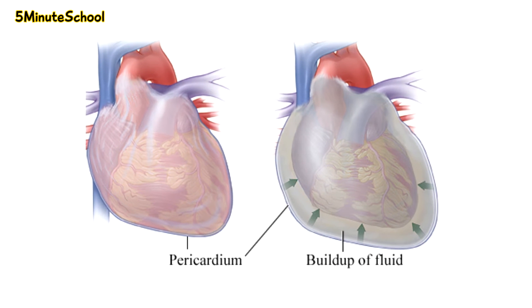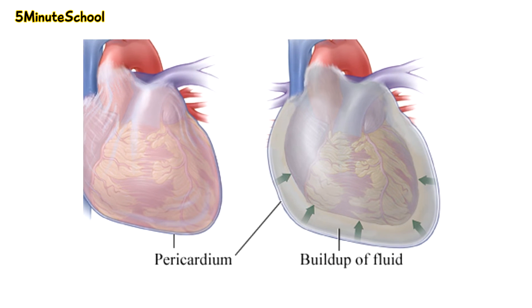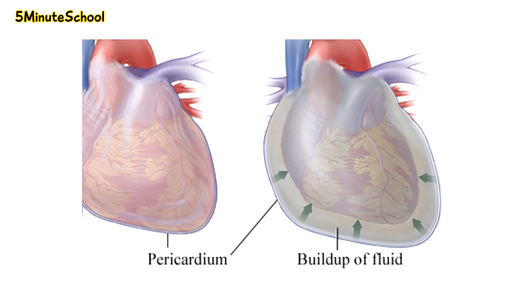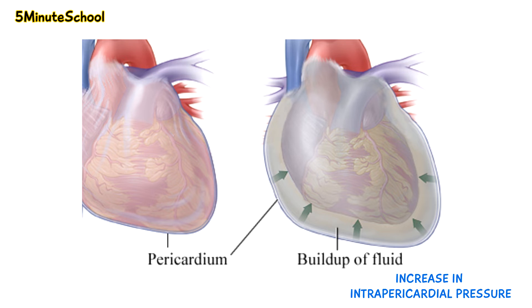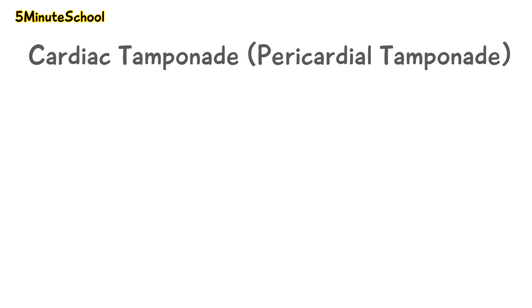If the build-up of pericardial fluid is too much and beyond the normal amount, there is an increase in intra-pericardial pressure, and if this gets too high it can end up affecting heart function. Pericardial effusion which increases intra-pericardial pressure to a large degree where it starts to affect cardiac function is called cardiac tamponade.